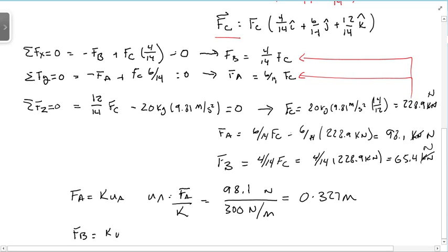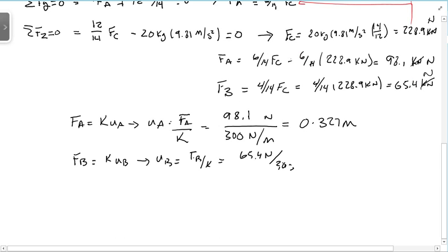FB is equal to K times UB. Therefore UB is FB divided by K is 65.4 newtons divided by 300 newtons per meter and that gives 0.218 meters. So there's our two answers and we're done.